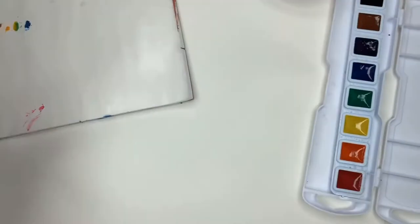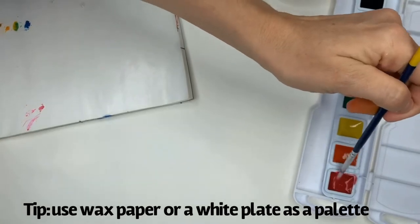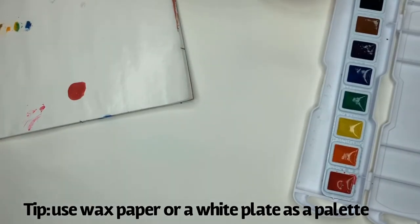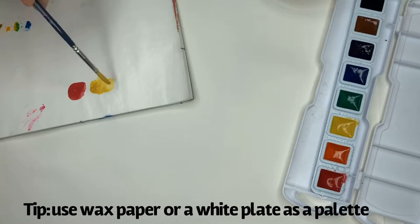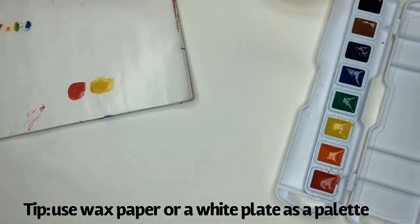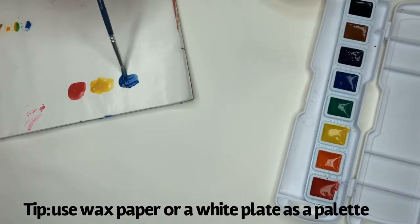I'll show you how to do this using basic school watercolors first. Just get each of the primary colors plus purple, red, yellow, blue, and violet, and make a blob of them on any type of palette. A plate or a piece of wax paper works fine.